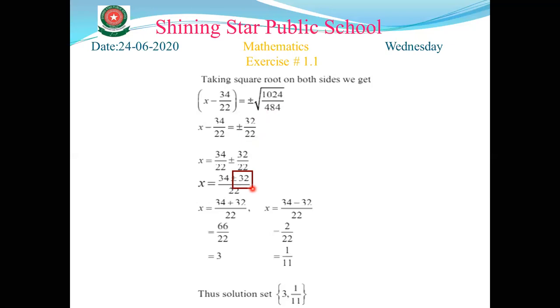In the seventh step, we do simplification. For the two values: (34 + 32)/22 = 66/22 = 3, and (34 - 32)/22 = 2/22 = 1/11. So 3 and 1/11 is your required answer.